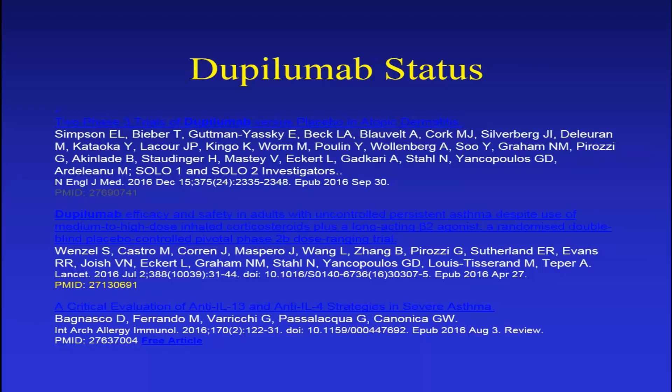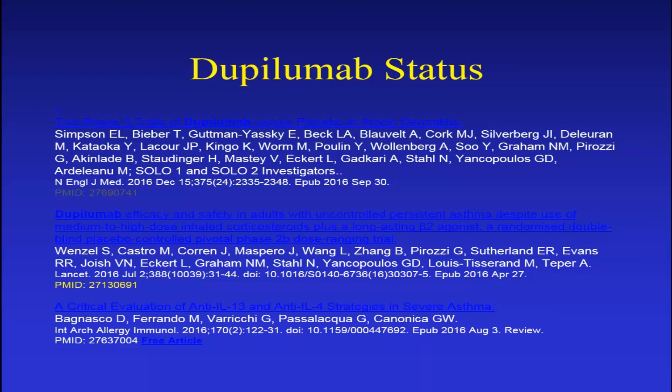The dupilumab effects were published in Lancet for asthma, with lead author Sally Wenzel, and a New England Journal publication of the large phase 3 trial on atopic dermatitis was the basis for FDA approval. The asthma data are just as strong, and it should get an indication for asthma within the next year. One of the big issues is how to select patients for these more expensive therapies, which would depend on biomarkers or characteristics. Anti-TSLP activates innate immunity cells to skew towards type 2 immunity, and its expression correlates with asthma and allergic diseases.